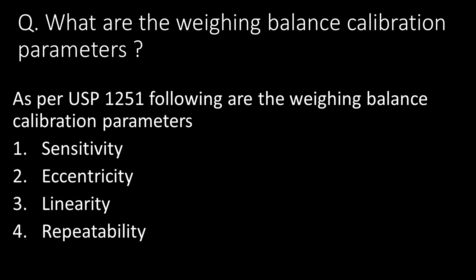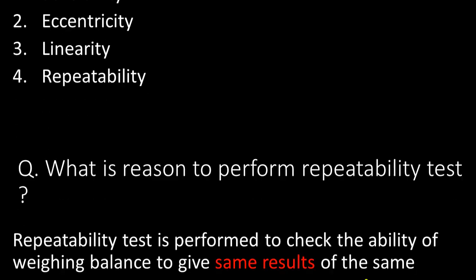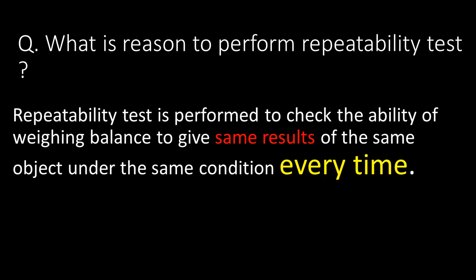What are the weighing balance calibration parameters as per USP chapter number 1251? The following are the calibration parameters: first, sensitivity; second, eccentricity; third, linearity; and fourth, repeatability.